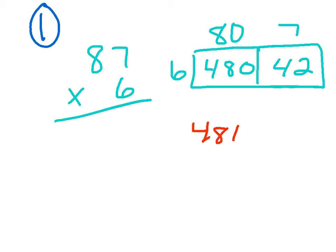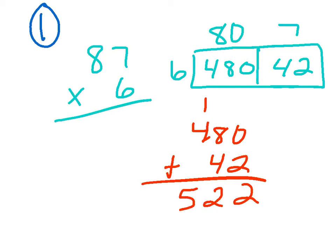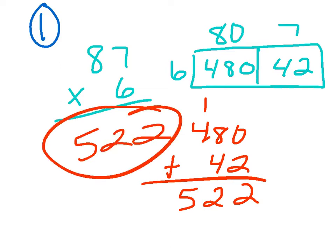and I just add them up, 480 plus 42, 0 plus 2 is 2, 8 plus 4 is 12, 1 plus 4 is 5, so 87 times 6, or 87 groups of 6, I have 522 as my answer. I take this, the bigger number, and I break it up into the expanded form.